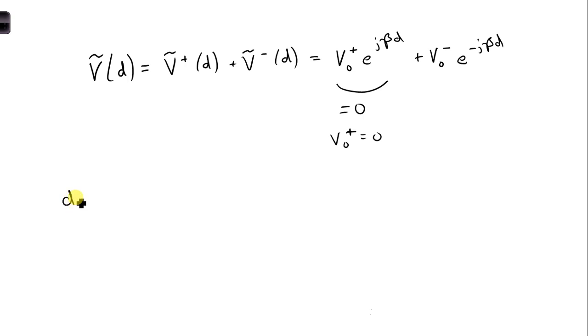Then for part D, we know that the total voltage phasor is just the V0 minus times E to the minus J beta D.